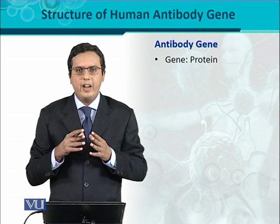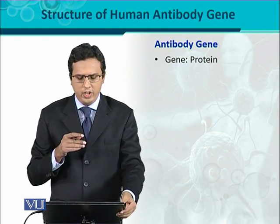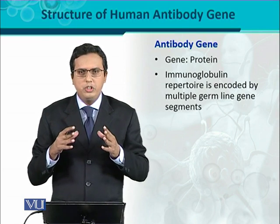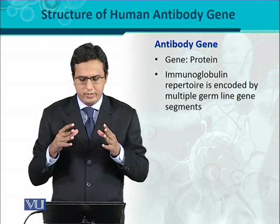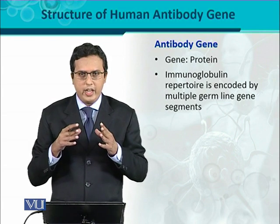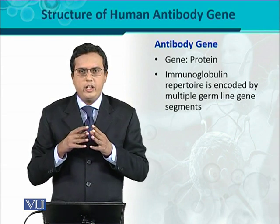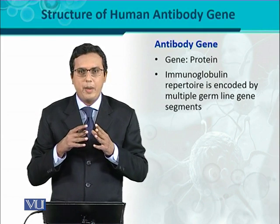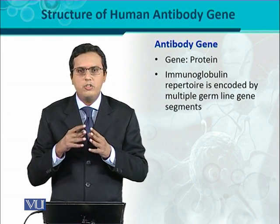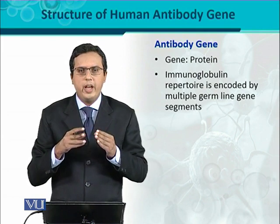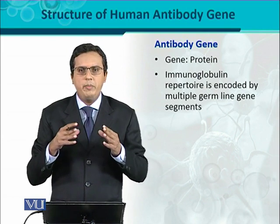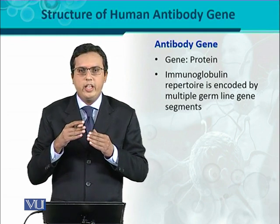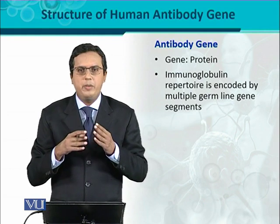The human immunoglobulin gene has an ability to produce the immunoglobulin repertoires by the germline gene segments. This means there are different varieties of immunoglobulins that are just going to be produced — those are called repertoires. These are produced because germline gene segments undergo a process of recombination or rearrangement, which is why such a large number of immunoglobulins can be produced.